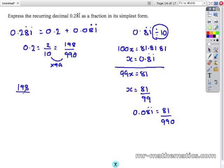Now we have to add these two fractions together just like we did with the decimals. So adding them together we get 279 over 990.